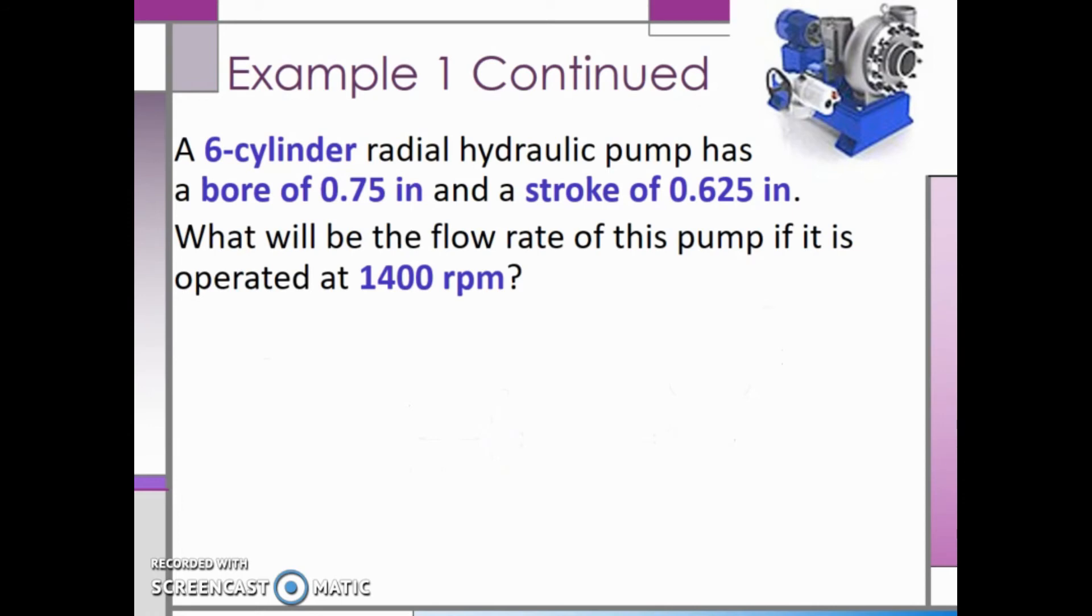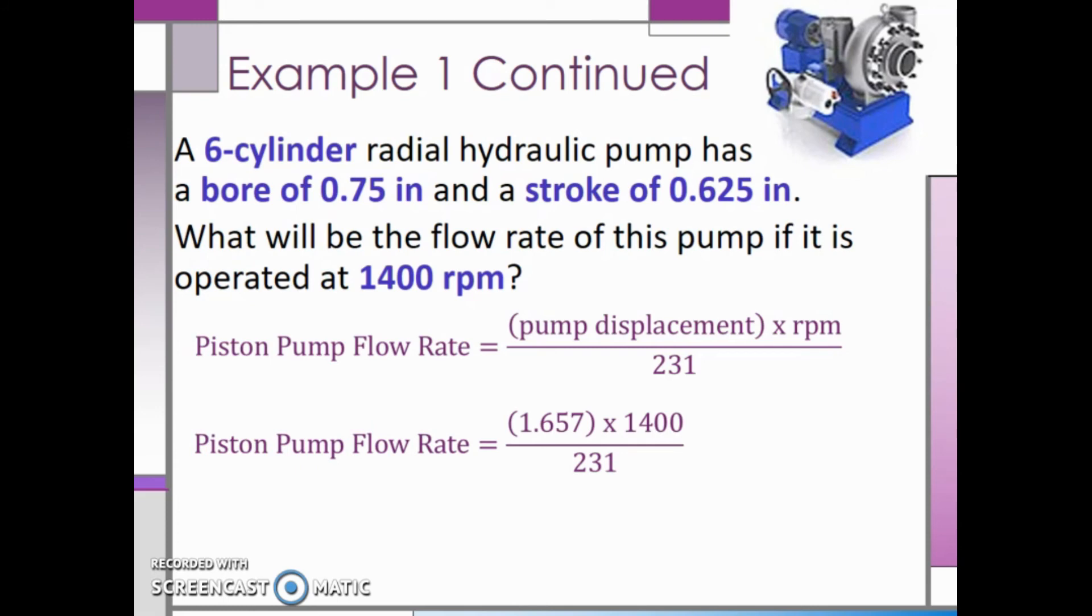Now that we have the displacement, we can find the piston pump flow rate by taking the pump displacement and multiplying by the speed of the pump and dividing by 231. Substituting in 1.657 cubic inches for the displacement, 1,400 for the speed and dividing by 231, we end up with a flow rate of 10 gallons per minute. This concludes our discussion of hydraulic pumps.